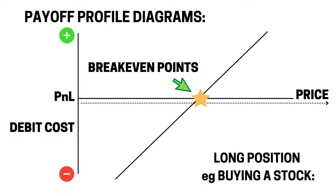Let's start by visualizing the issues using payoff profile diagrams. In front of you, you can see profit and loss on the y-axis and price on the x-axis. That straight 45-degree line going up represents buying a long position in a stock — as the price rises you make money, as it falls you lose money. The star point is the break-even point. That's the payoff profile for going long, buying the stock.